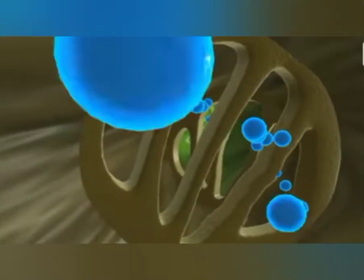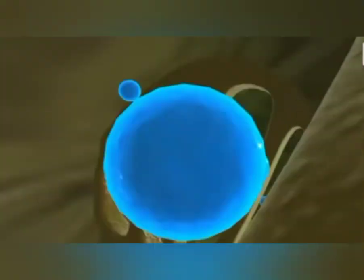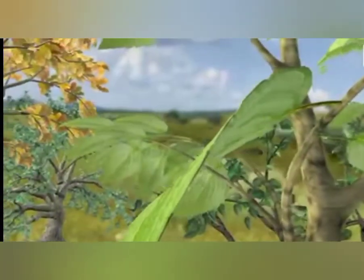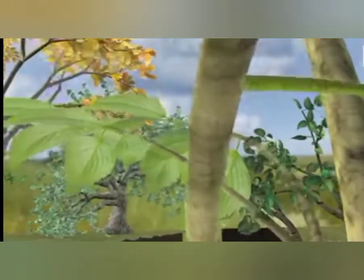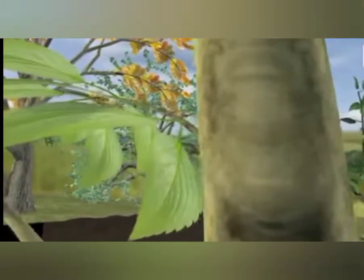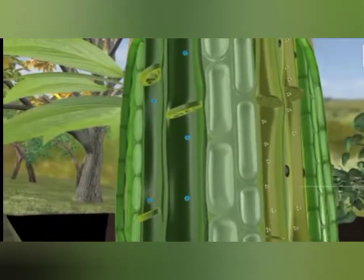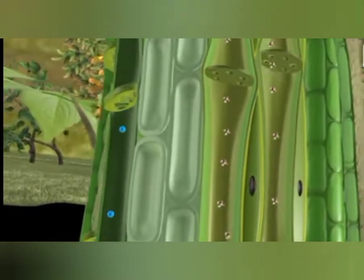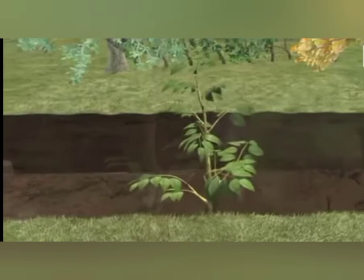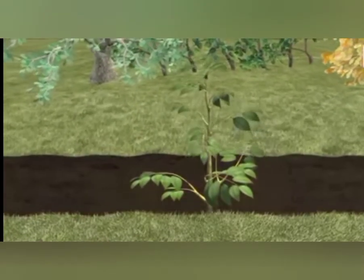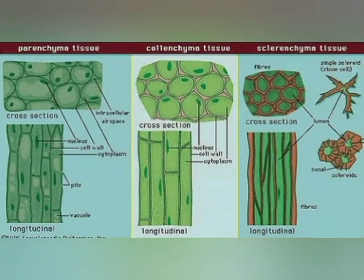You can see how water is getting transported in xylem — only in one direction, from down to top. Now in phloem, the direction of transport will be both ways — upwards and downwards. Between xylem and phloem you can see the cambium.